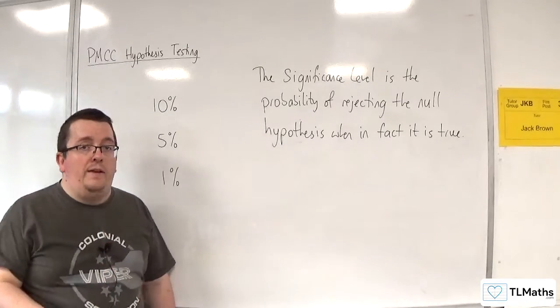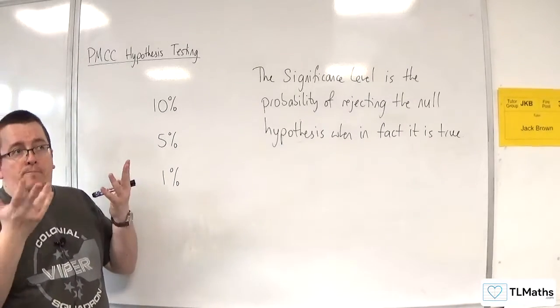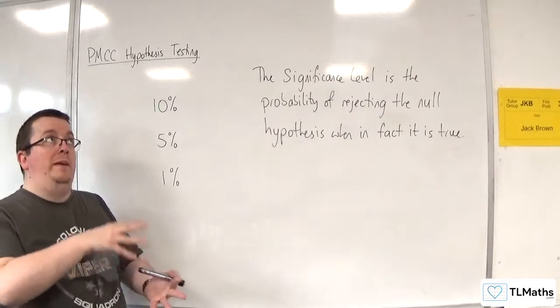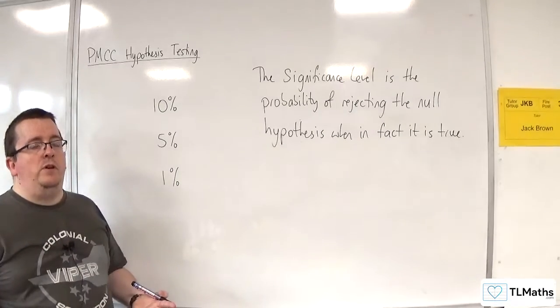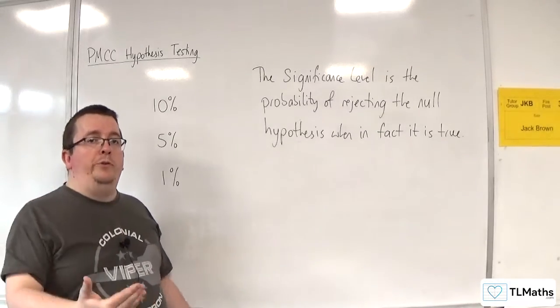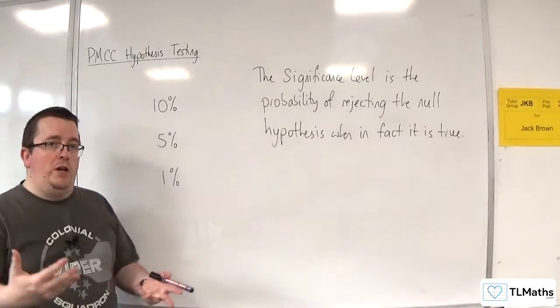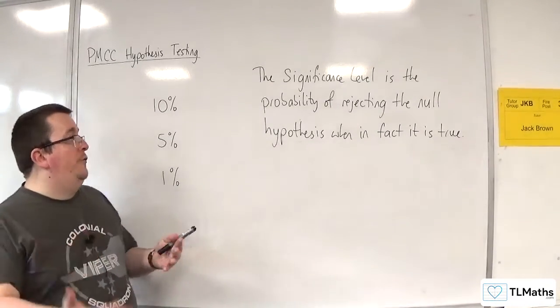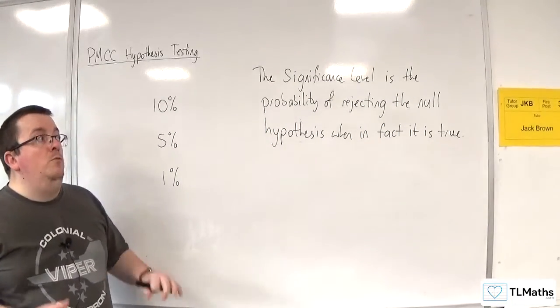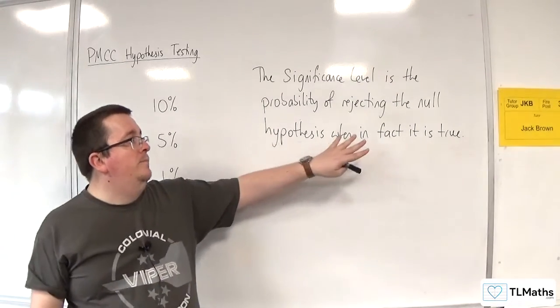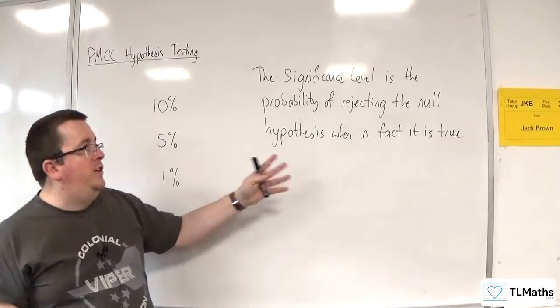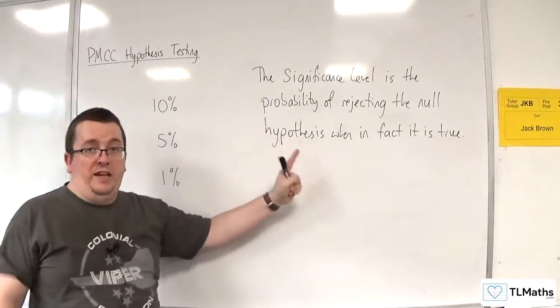As I said, or inferred, in the exam question you won't be setting a significance level. But you might have to discuss the pros and cons of changing a significance level and what the difference is between a 10% or 5% or a 1% significance level. You might also be asked to state what a significance level is, in which case you need to learn this statement.